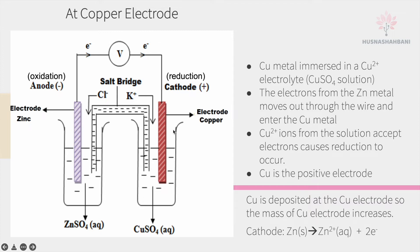At the cathode — because this is the positive electrode, we call it the cathode — the copper ions in the copper sulfate electrolyte accept two electrons from the zinc to become copper solid.